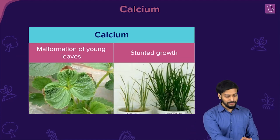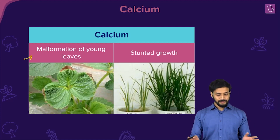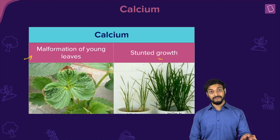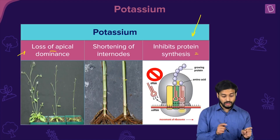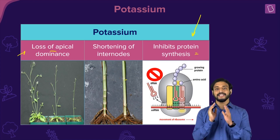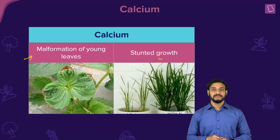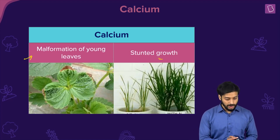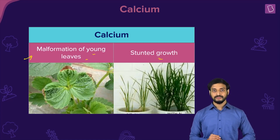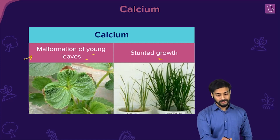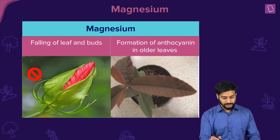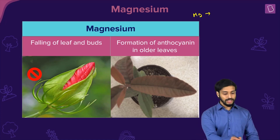Calcium is a structural element, and its deficiency causes malformation of young leaves and stunted growth. To recap: potassium deficiency leads to loss of apical dominance, shortening of internodes, and inhibited protein synthesis; calcium deficiency leads to malformation of young leaves and stunted growth.